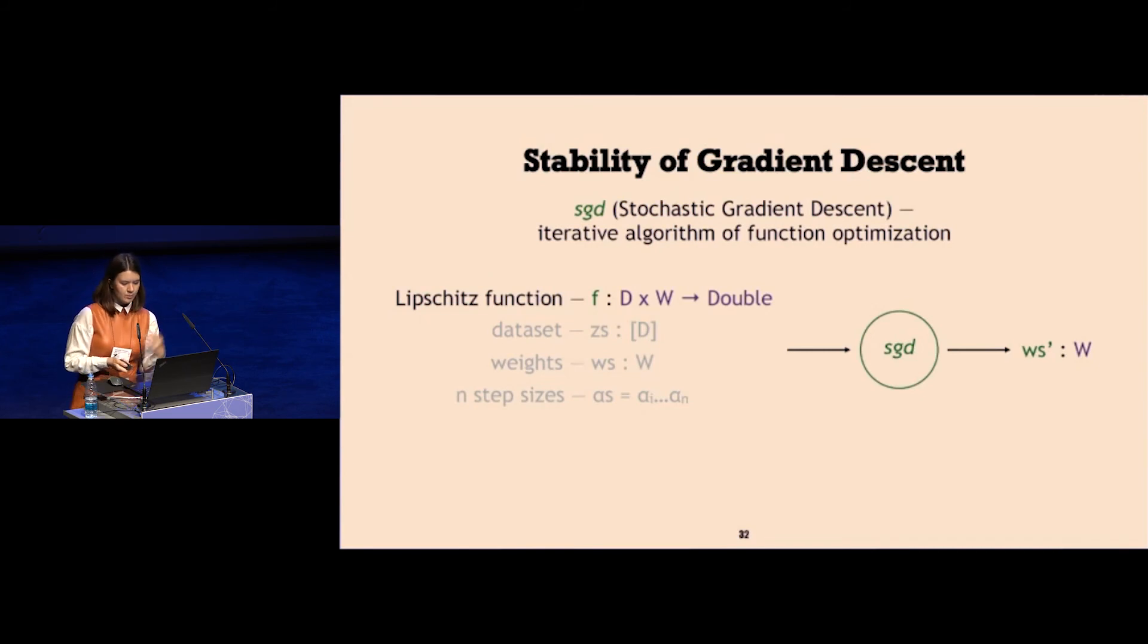We are given a data set on which we can trial run the function, and then we are given the initial weight which we can try to optimize. The function sgd performs n steps of optimization, each of them has a certain influence on the outcome, which is supplied by the final argument, the list of step sizes, the influences.